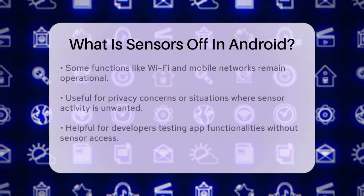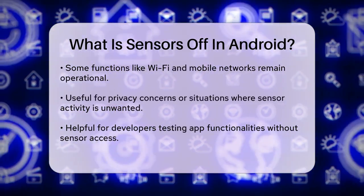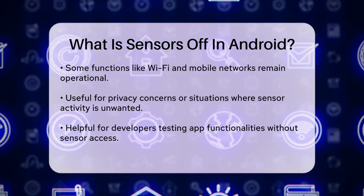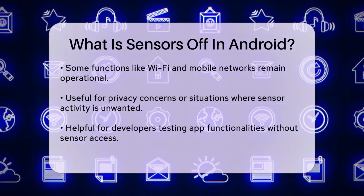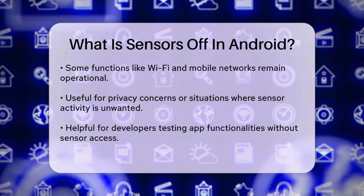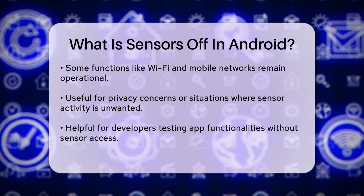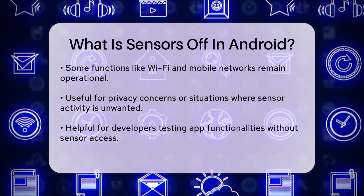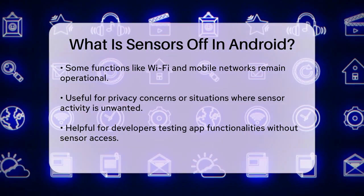However, some functions like Wi-Fi and mobile networks will still work normally. This feature is particularly useful if you're concerned about privacy or if you're in a situation where you don't want your phone's sensors to be active. For example, if you're heading into a sensitive meeting or just want to ensure no apps are secretly accessing your camera or microphone, this feature can give you peace of mind. It's also handy for developers who need to test how their apps work without certain sensors.